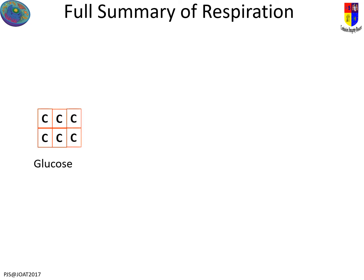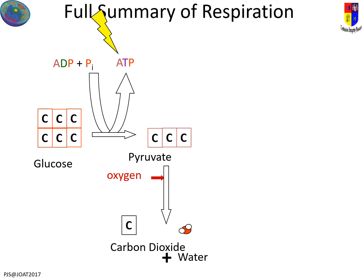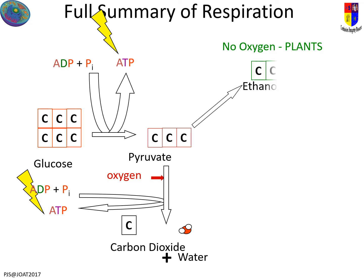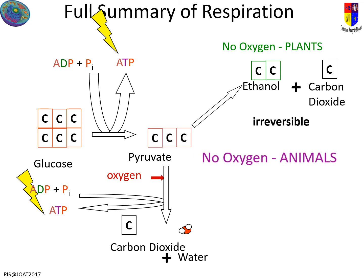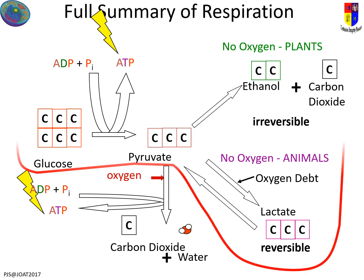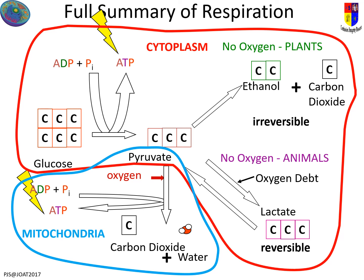Here's a full summary of the whole thing. We take glucose and break it down into pyruvate, getting a little bit of energy out. If we've got oxygen, we go all the way to carbon dioxide and water with a whole pile of energy. If there's no oxygen and it's a plant, we change it to ethanol and carbon dioxide — that's plant fermentation. In animals, we go to lactate, building up an oxygen debt, and it's reversible so we can go back to pyruvate. All the glycolysis happens in the cytoplasm, while the aerobic stage happens in the mitochondria.